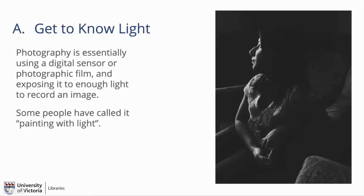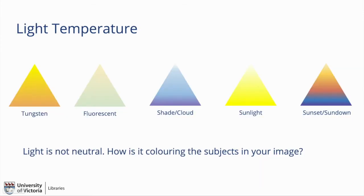The more you understand light, the stronger your photography will be. If you spend some time around average photographers, you'll hear phrases like 'look at that light' or 'we were chasing light that evening,' where they'll talk about the quality of light. Photography is essentially using a digital sensor or photographic film and exposing it to enough light to record an image. Light has a variety of colors, and the type of light hitting your subject will change the tones of your photo.